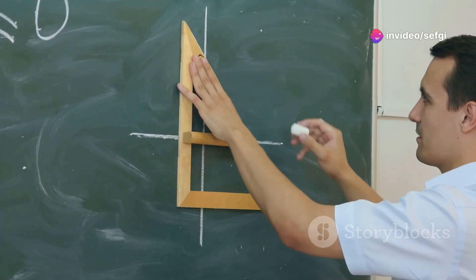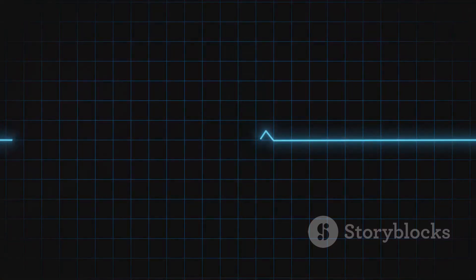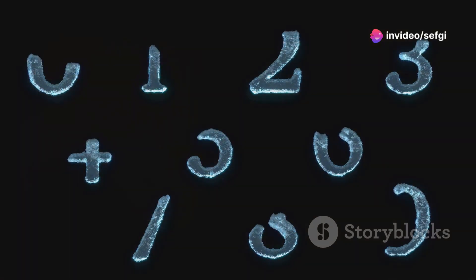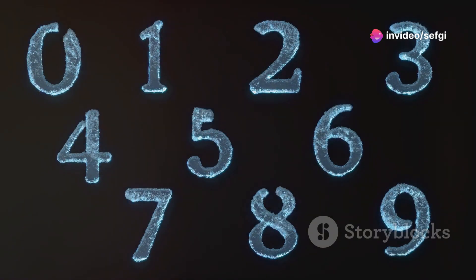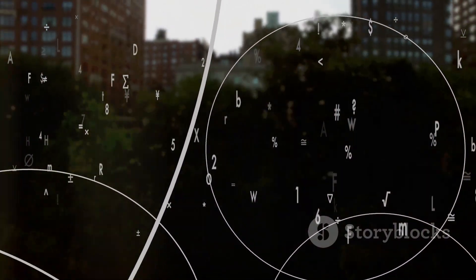One of the simplest ways to visualize infinity mathematically is on the number line. Imagine a line extending endlessly in both directions. To the right, numbers increase forever, approaching positive infinity. To the left, they decrease infinitely, approaching negative infinity.